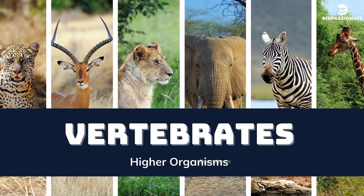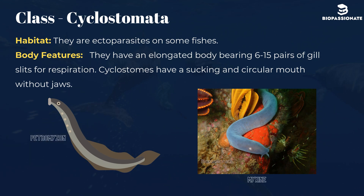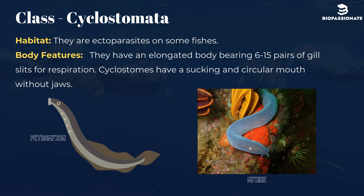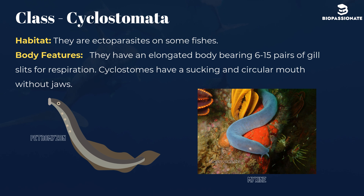Now let's look into the examples and features of vertebrates. Class Cyclostomata. They are ectoparasites on some fishes. They have an elongated body bearing 6 to 15 pairs of gill slits for respiration. Cyclostomes have a sucking and circular mouth without jaws. Examples: Petromyzon (lamprey) and Myxine (hagfish).